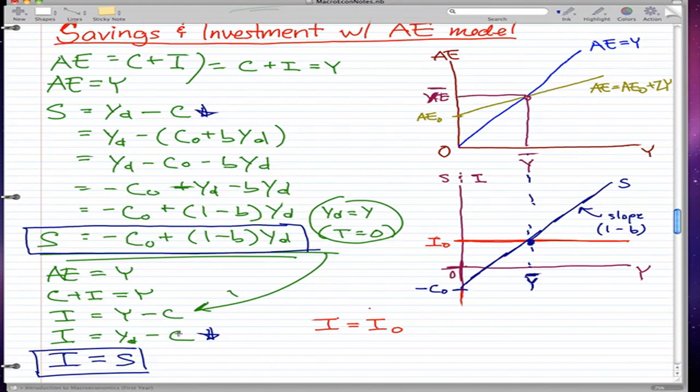So essentially what I'm saying is, when we have equilibrium, when we have equilibrium spending and equilibrium income, our investment and our savings would be equal. And that's what I wanted to make of it in this video.